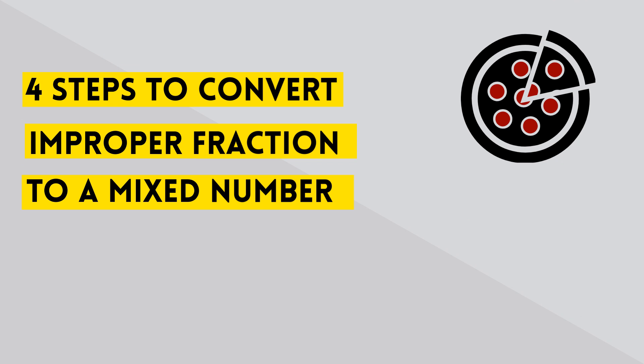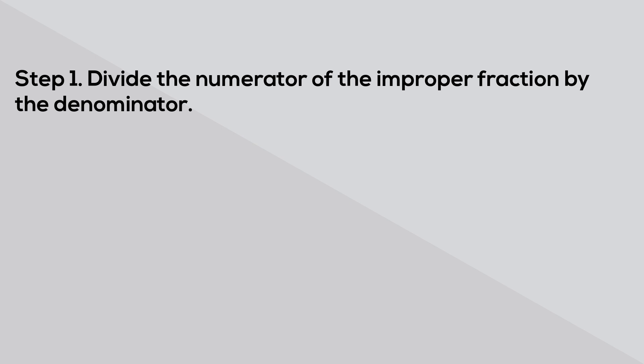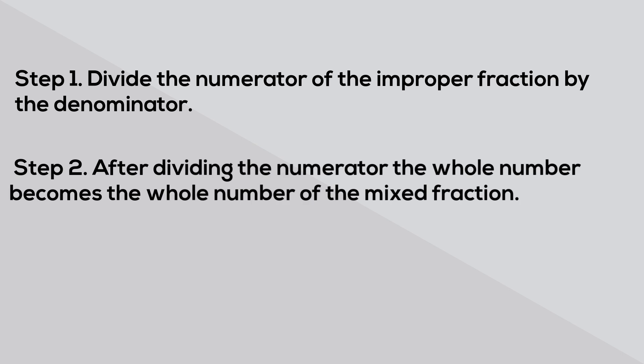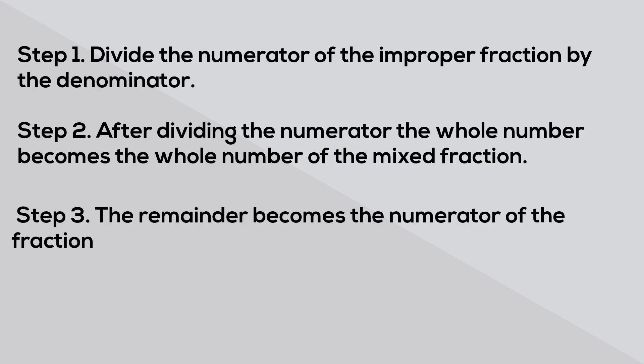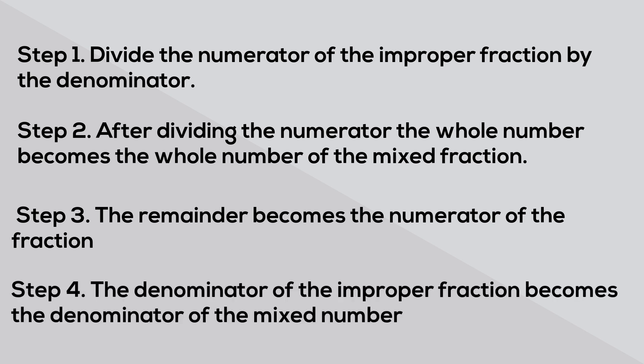You can convert an improper fraction to a mixed number by following these four steps. Step 1: divide the numerator of the improper fraction by the denominator. Step 2: after dividing, the quotient becomes the whole number of the mixed number. Step 3: the remainder becomes the numerator of the fraction, and the denominator of the improper fraction becomes the denominator of the mixed number.